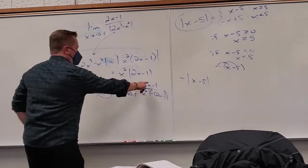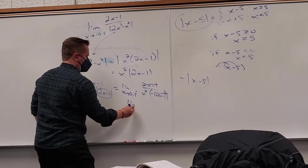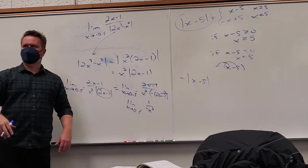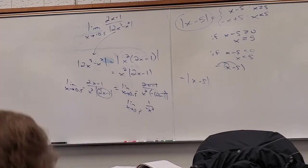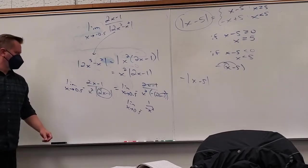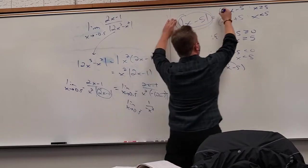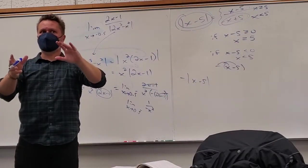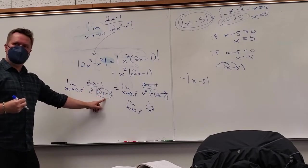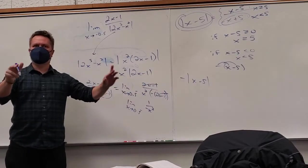Since we know it's approaching from the left, I know every number I put in will make 2x − 1 negative. The absolute value then multiplies by −1 to change its sign. Now the (2x − 1) terms can cancel. So you can 'invert' the absolute value because it's approaching from the left — that's the key insight.